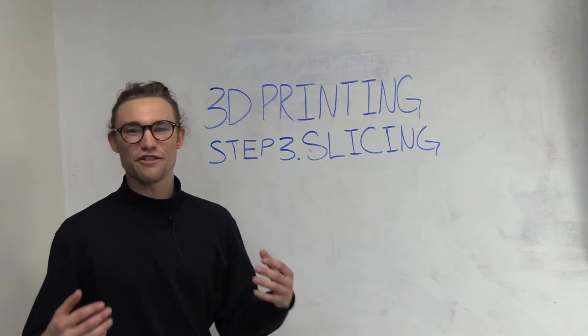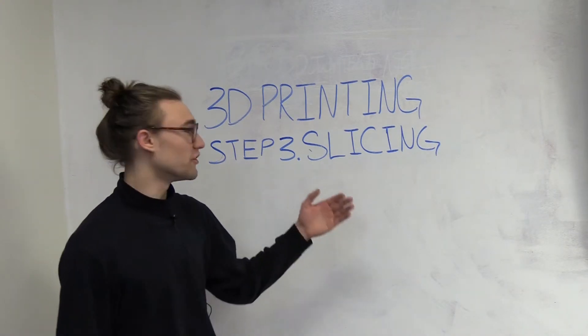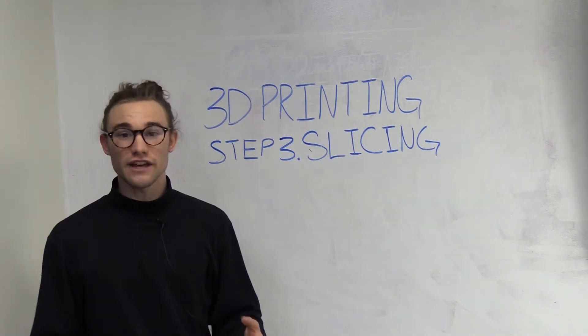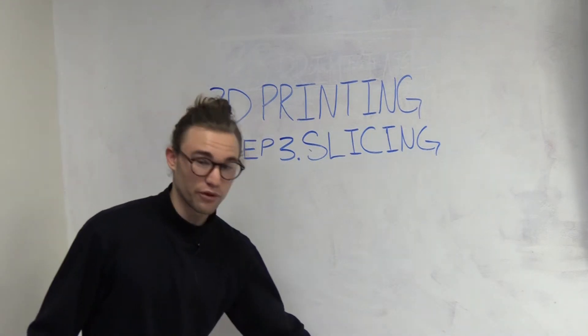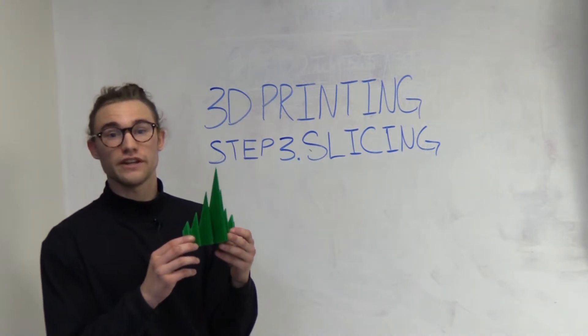Step three in the 3D printing process is called slicing. Slicing is the term used to determine which route the printer will take in order to bring you your tangible 3D printed object.